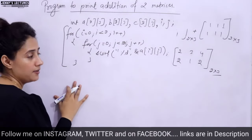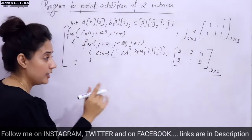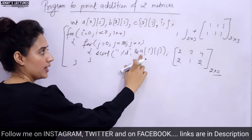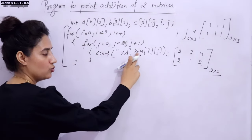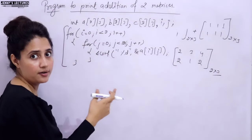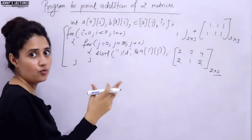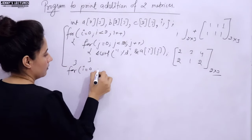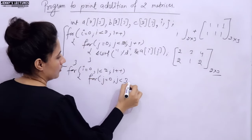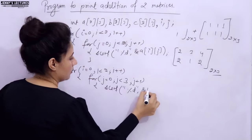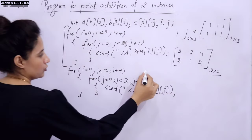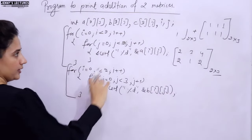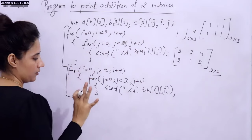Now for the second matrix, simply write down the same thing, but rather than address of A, you will write address of B of I J. This for loop will read the second matrix.